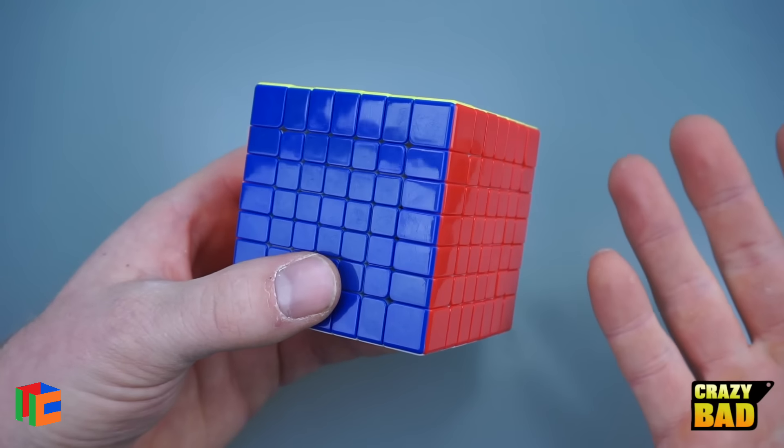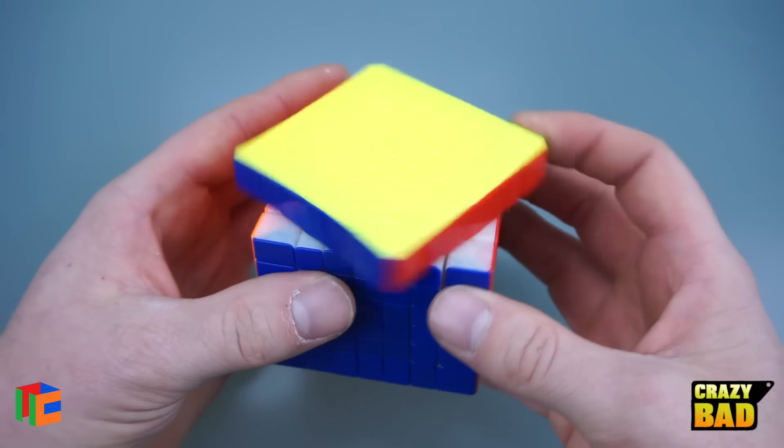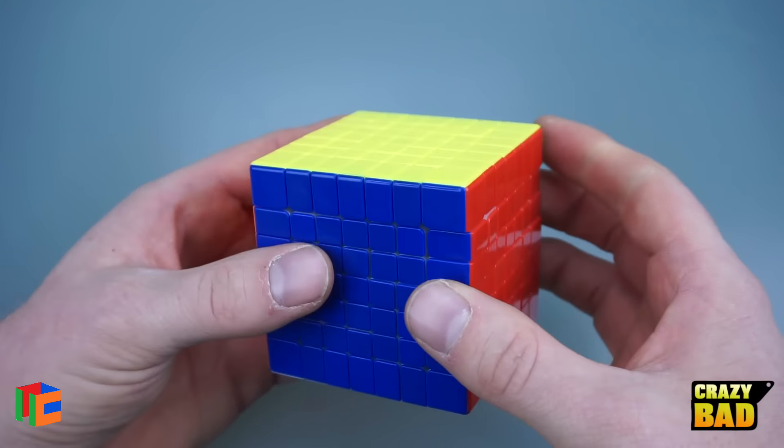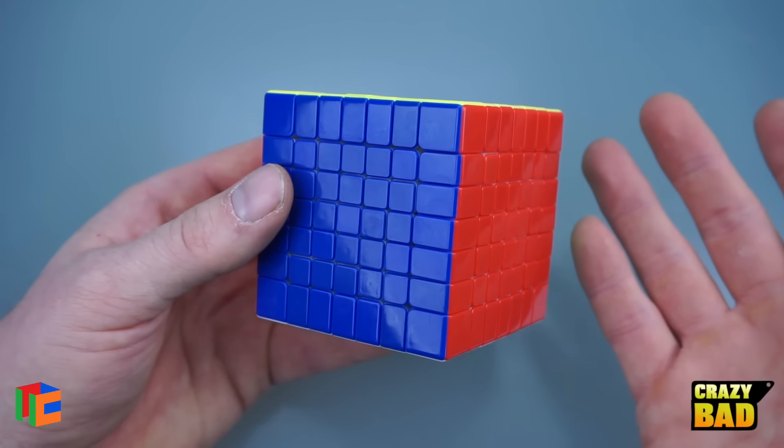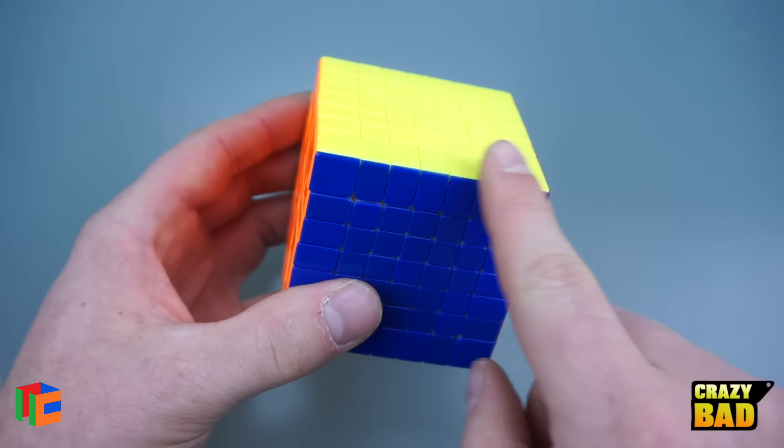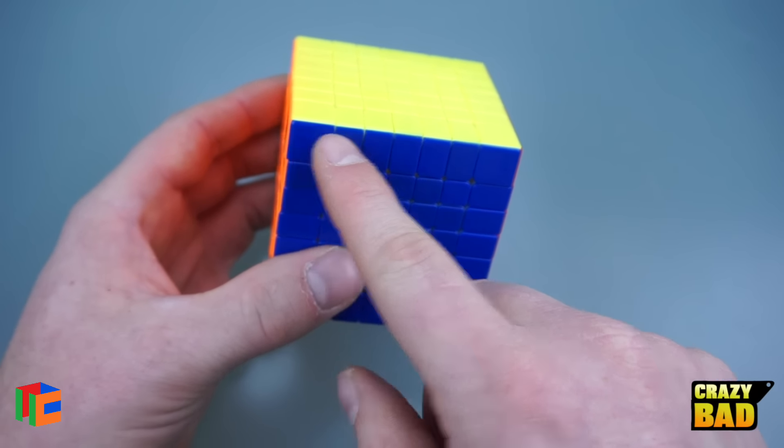This is made by Yushin, but the actual name of it is the Huanglong 7x7, and it only comes in stickerless. I don't know if they're going to come out with different colors like black and white in the future, but for now all we can get is stickerless and it's $40 on thecubicle.us. It's 69 millimeters from side to side and weighs 226 grams.